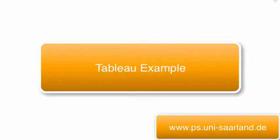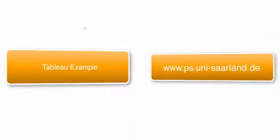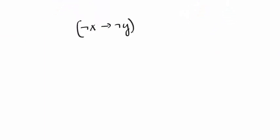In this video we will use the tableau method to prove validity of a formula. The formula we consider is: not x implies not y implies y implies x. The first step is to make this a signed formula by annotating it with a minus. Now what we will do is prove unsatisfiability of this signed formula. At the moment all we have is the minus implication formula on which to work.